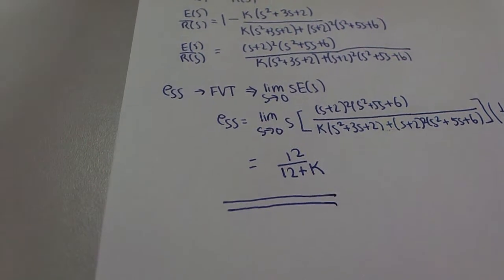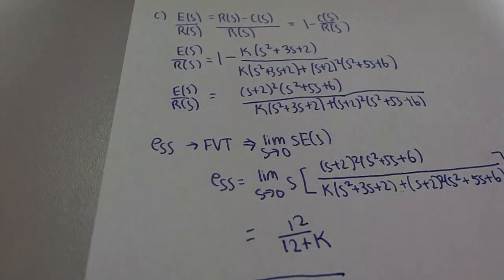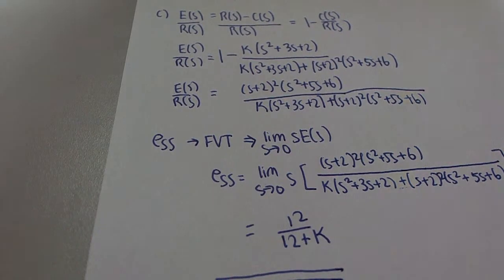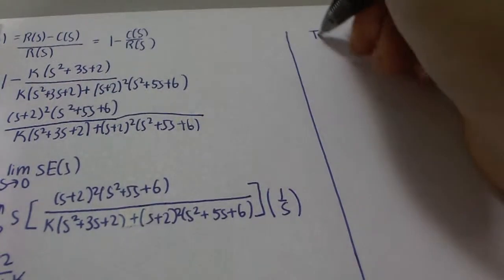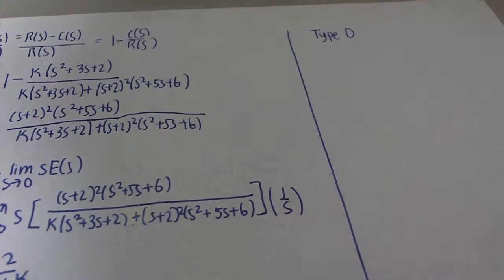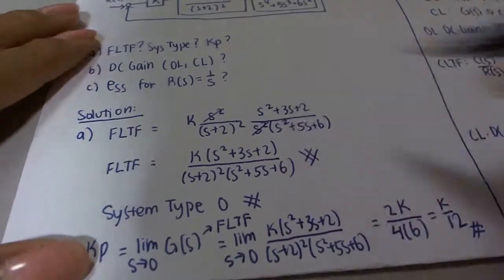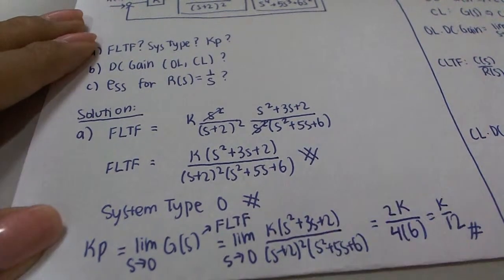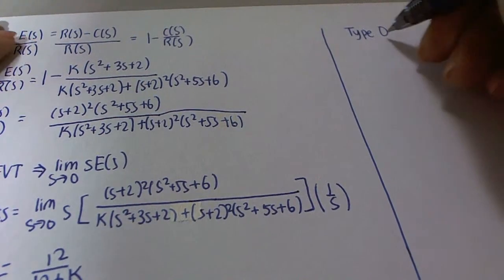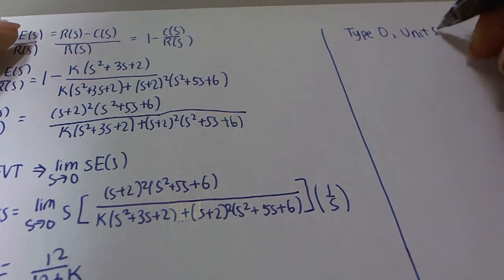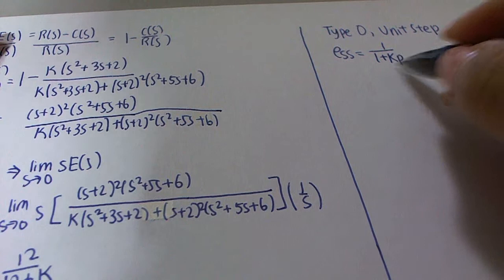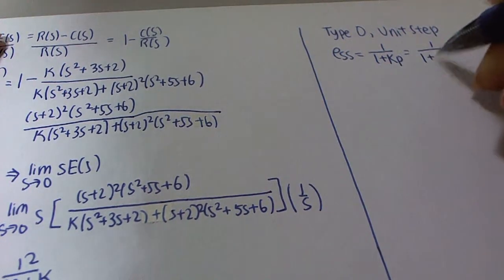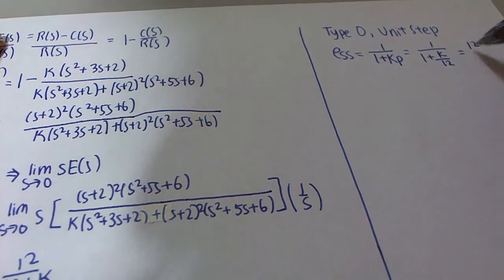As mentioned in Problems 1 and 3, this is the traditional method of solving for steady state error. We can also use the express method based on the system type table. We have a Type 0 system, as found in the first part. For a Type 0 system with a unit step input, the steady state error equals 1 over (1 plus Kp). Since Kp equals k over 12, the steady state error is 12 over (12 plus k), confirming our earlier result.